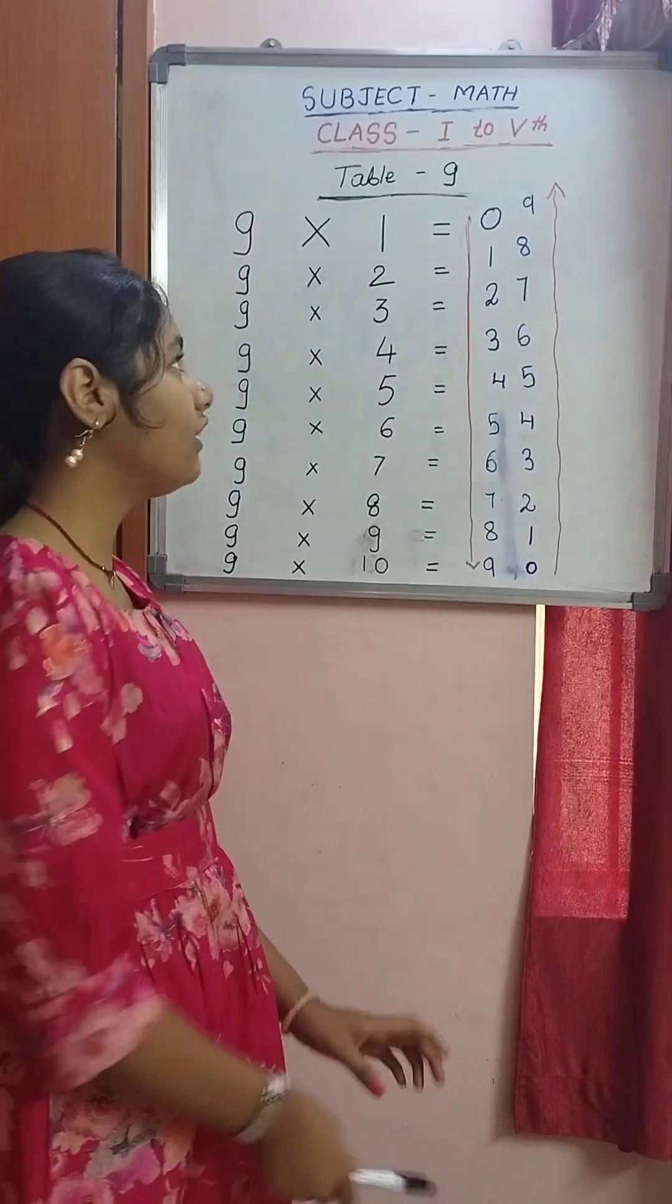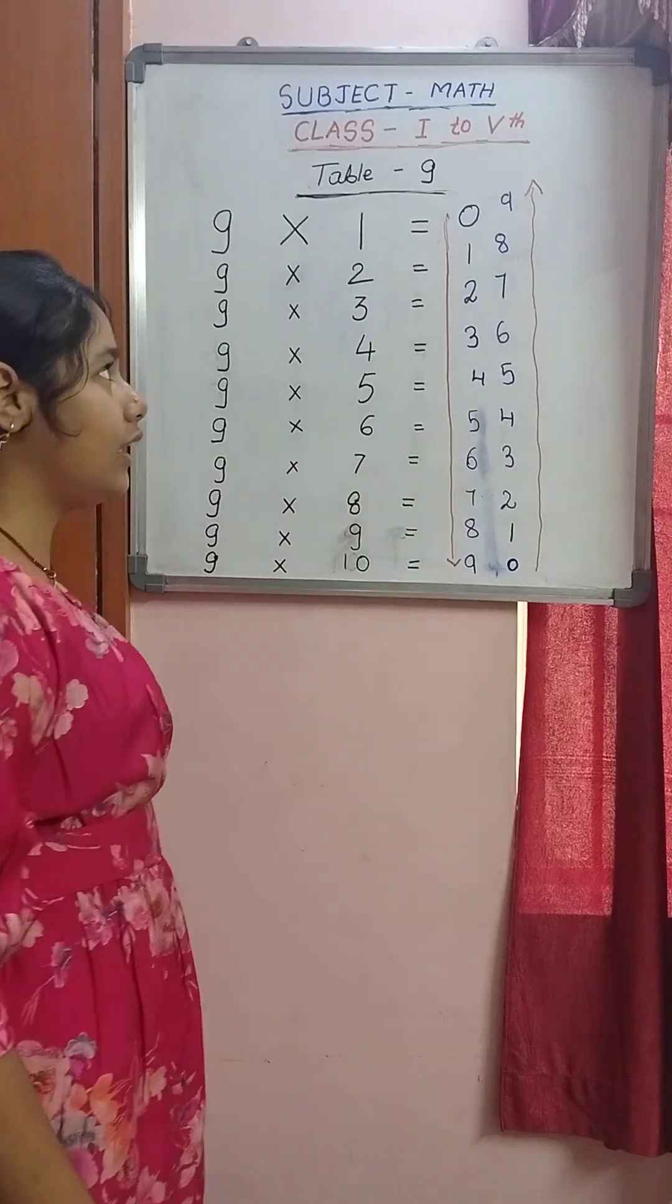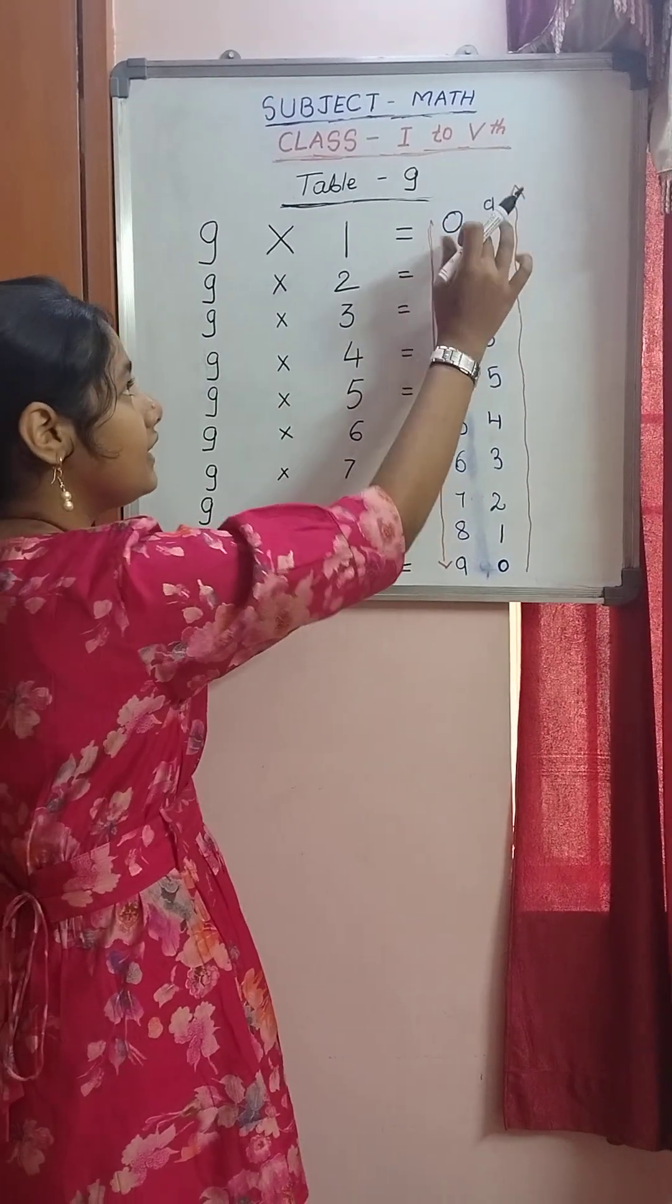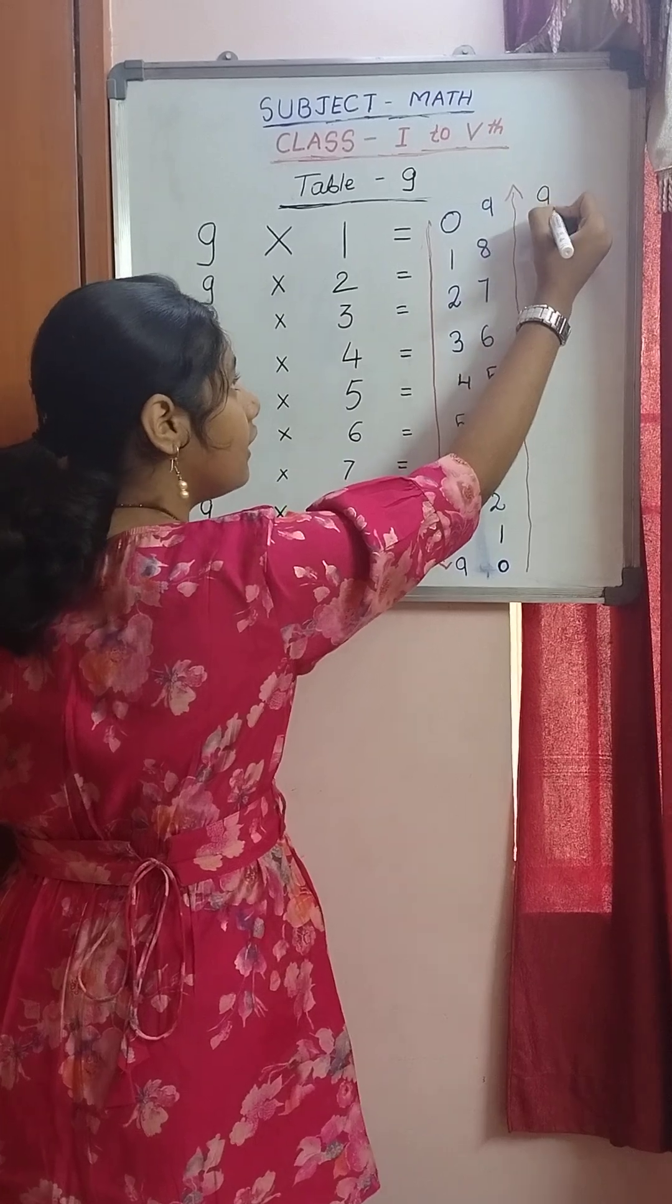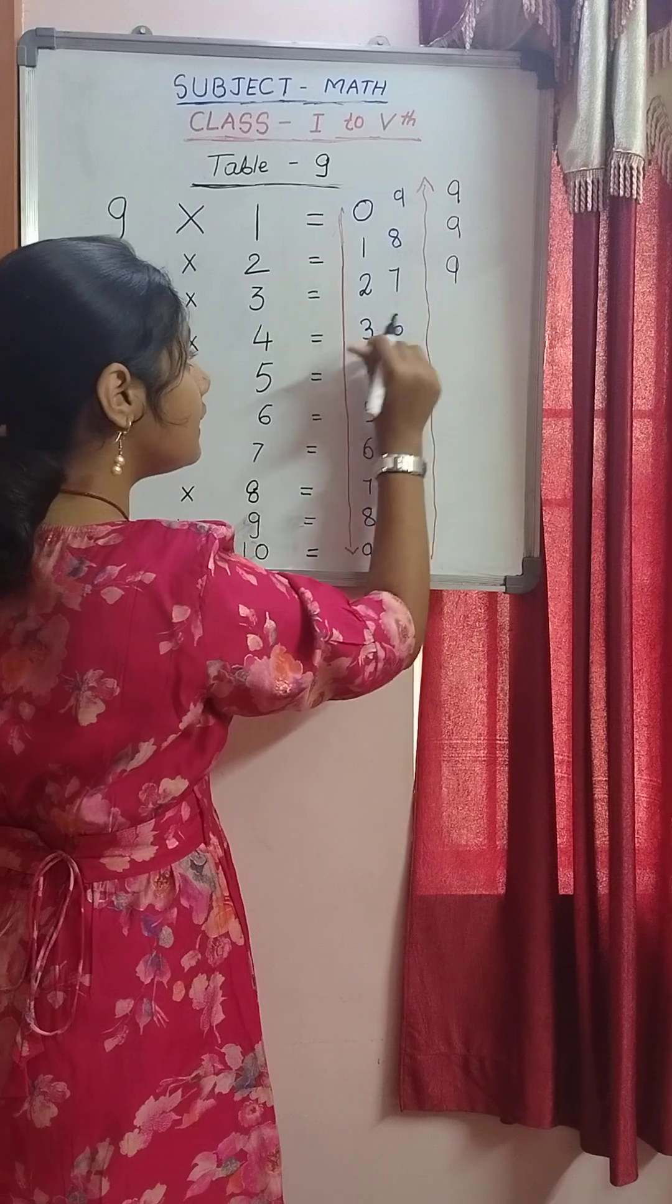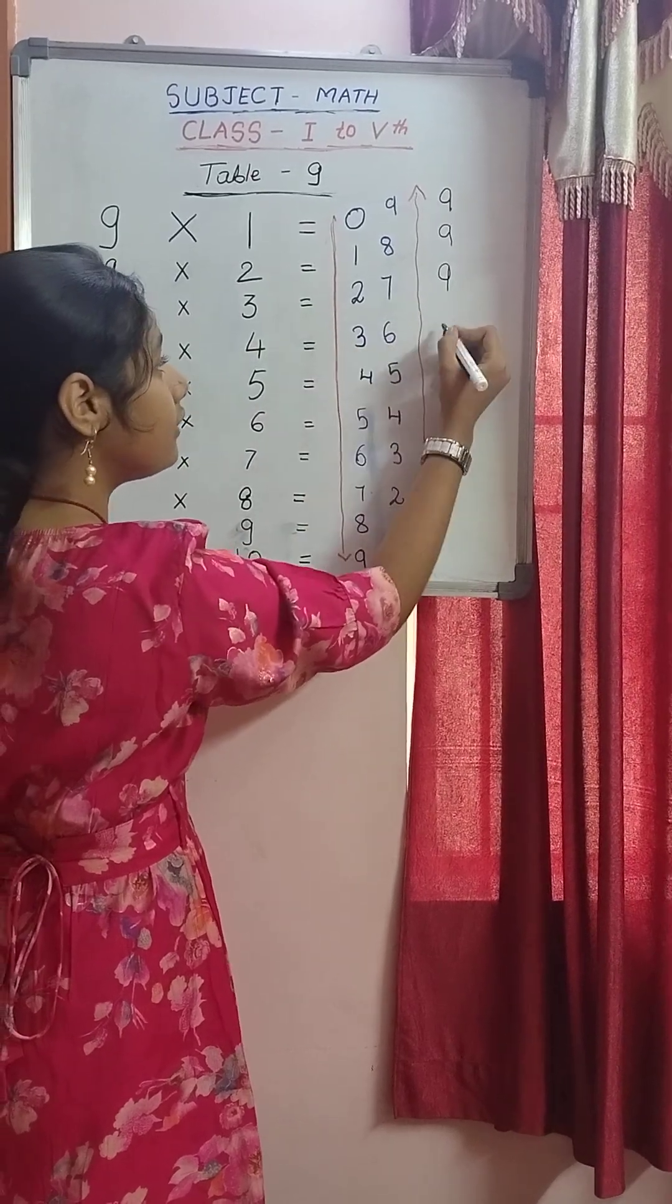Showing my friends how to prove that this is the correct 9 table, you can add the digits. So 0 plus 9 equals 9, 1 plus 8 equals 9, 2 plus 7 equals 9, 6 plus 3 equals 9.